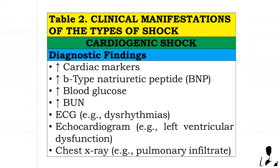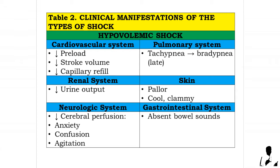Diagnostic findings in cardiogenic shock: increased cardiac markers, increased brain-type natriuretic peptide, increased blood glucose, and increased blood urea nitrogen. ECG shows dysrhythmias; echocardiogram shows left ventricular dysfunction; and chest X-ray shows, for instance, pulmonary infiltrates. Next is hypovolemic shock.